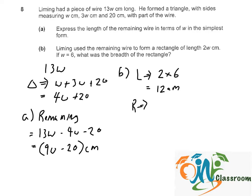which is 9W minus 20, will be now 9 times 6 minus 20, which is 54 minus 20. We have 34.